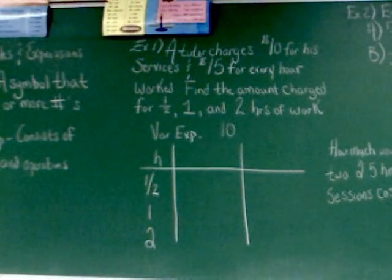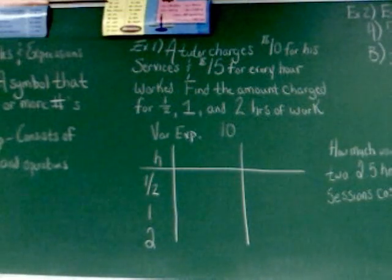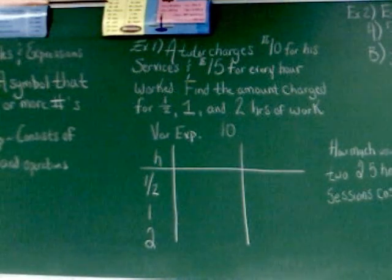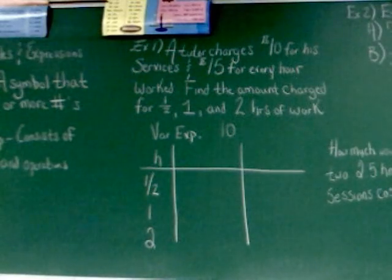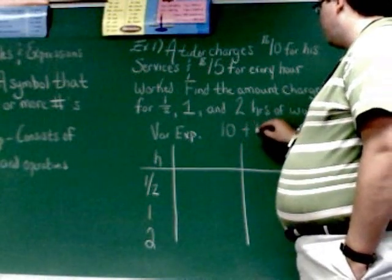If I said to you they work for nine hours, what problem would you do? What times what? Fifteen times nine. Fifteen times nine. So in a general sense, we're multiplying fifteen by the number of hours worked. And that's what we're going to add into this. Plus fifteen H.